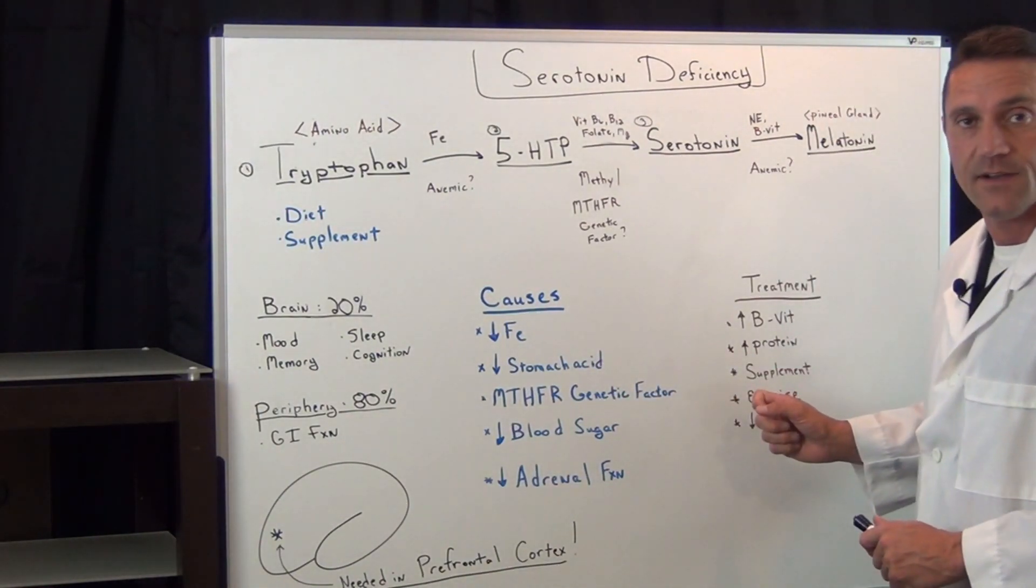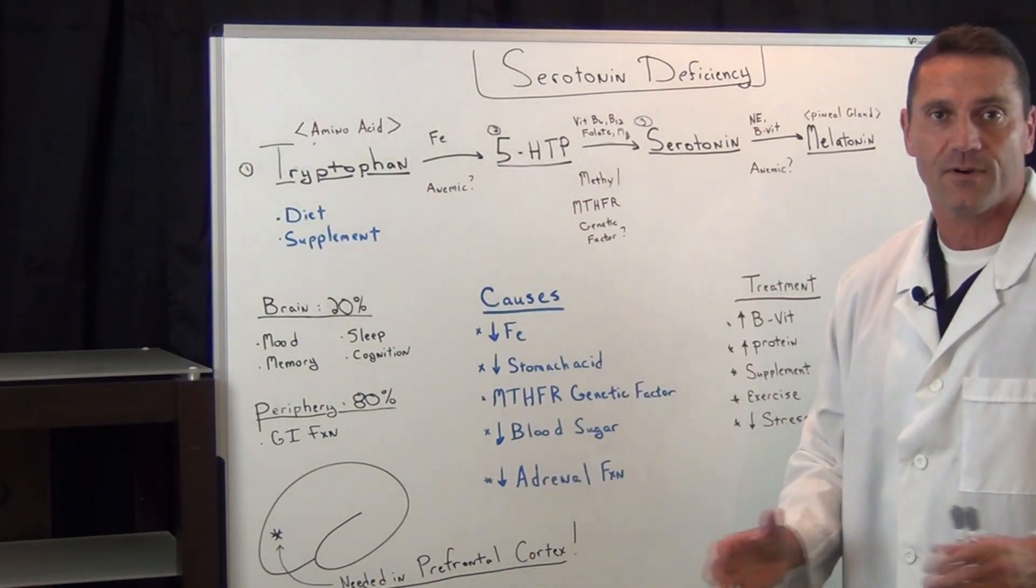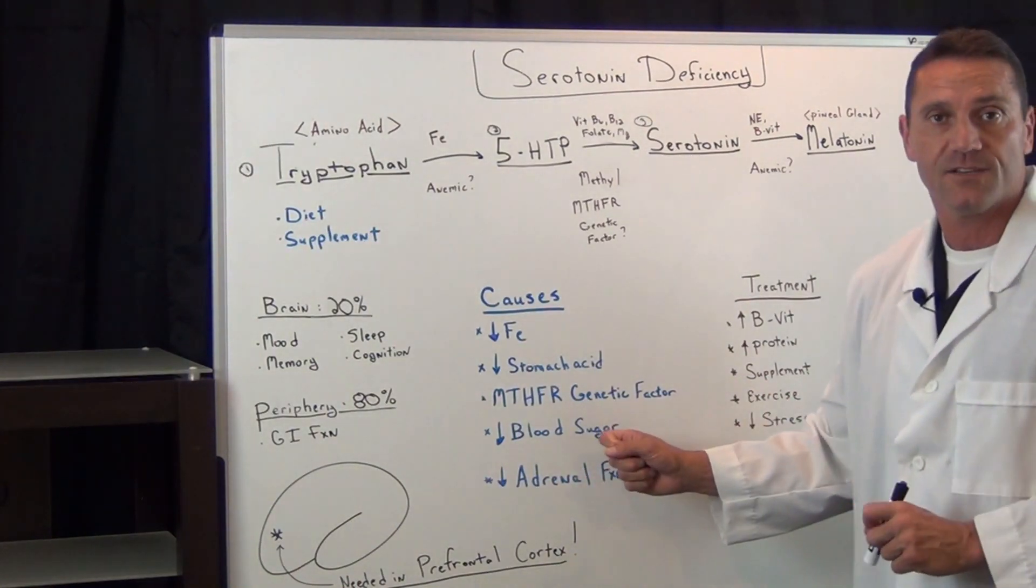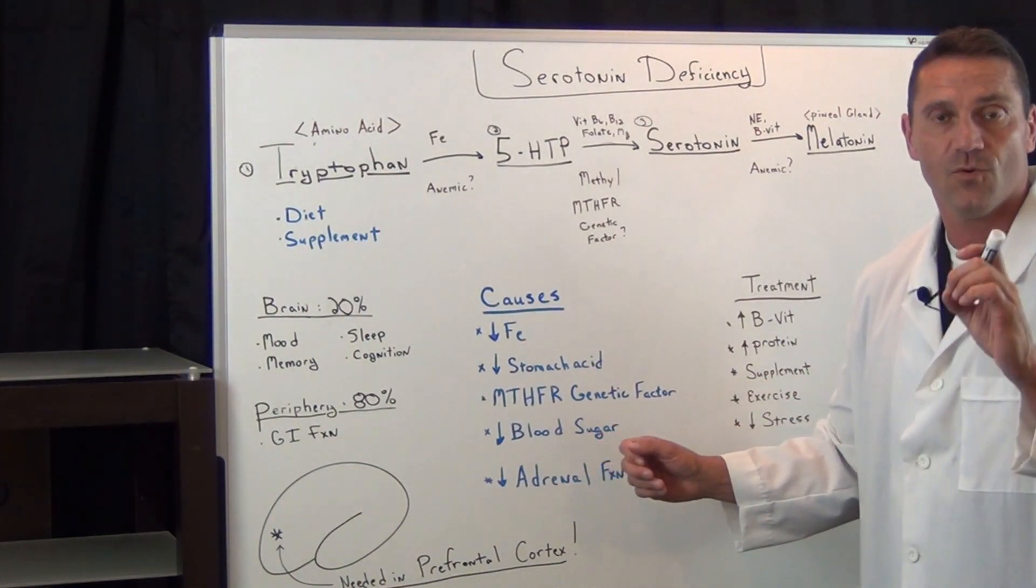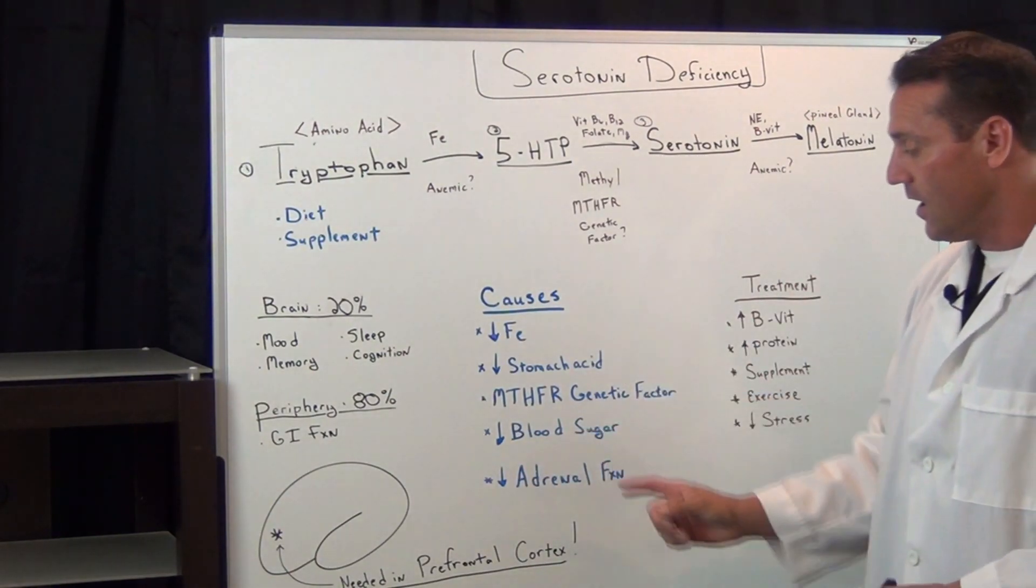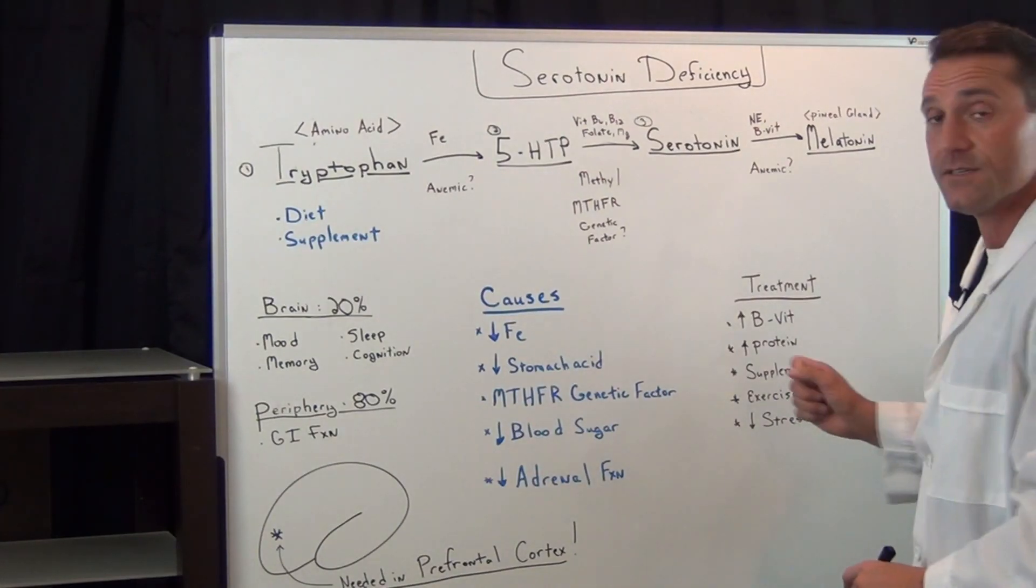Also, do exercise. Exercise is very important because exercise does a dynamic amount of benefits. One, it releases endorphins, it stabilizes the blood sugar, it makes the receptors more insulin sensitive, it makes you less insulin resistant. Also too, it stabilizes the adrenals. So exercise is a must.